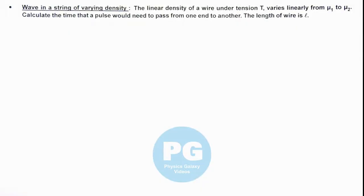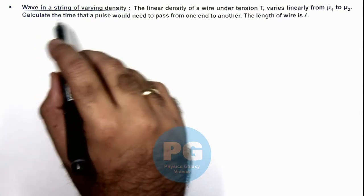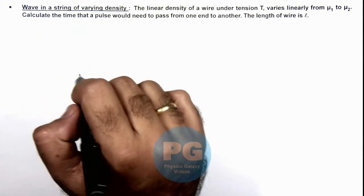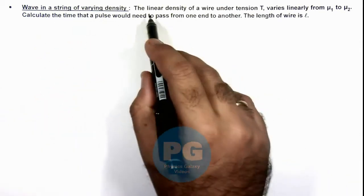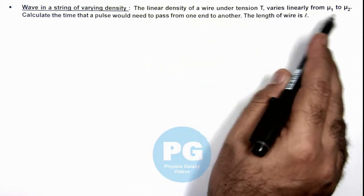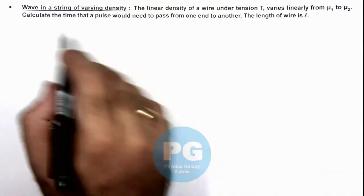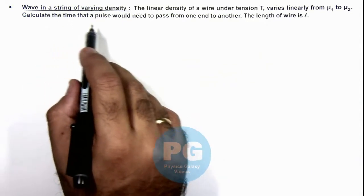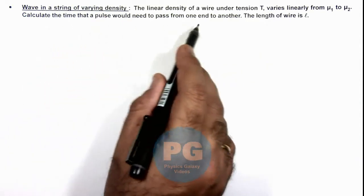In this illustration, we'll analyze a wave in a string of varying density. Here we are given that the linear density of a wire under tension T varies linearly from μ1 to μ2, and we are required to calculate the time that a pulse would need to pass from one end to another. The length of the wire is L.